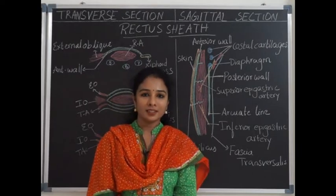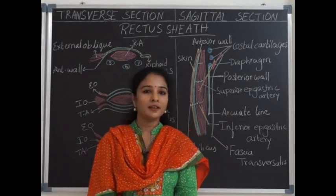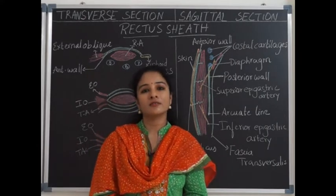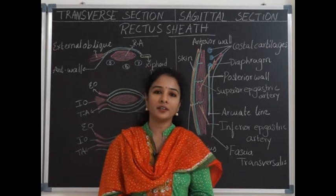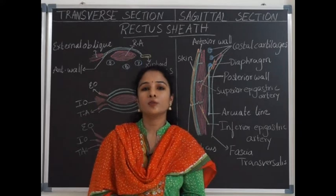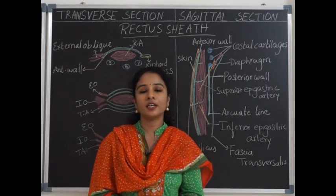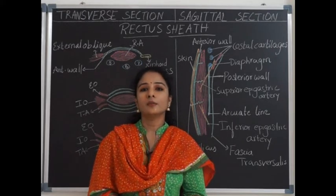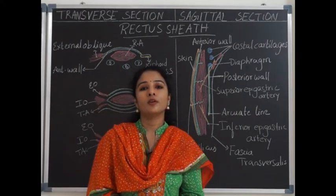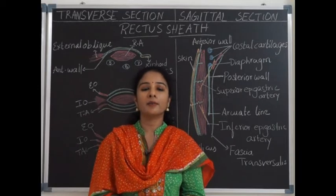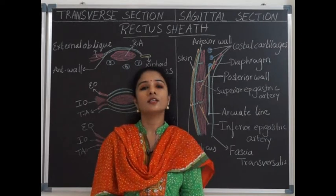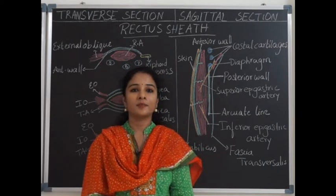Welcome back to Anatomy channel. Today we shall cover the abdominal wall, studying the rectus sheath and fascia transversalis, which are related to the anterior abdominal wall. The blood supply of the anterior abdominal wall is by the superior epigastric artery and musculophrenic artery — both branches of the internal thoracic artery. From inferiorly, the anterior abdominal wall muscles are supplied by the inferior epigastric artery and deep circumflex iliac artery, which are branches of the external iliac artery.